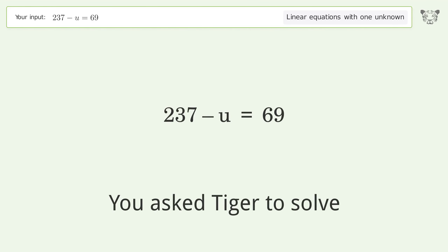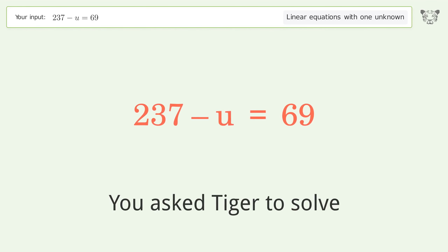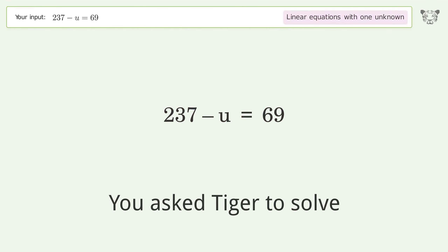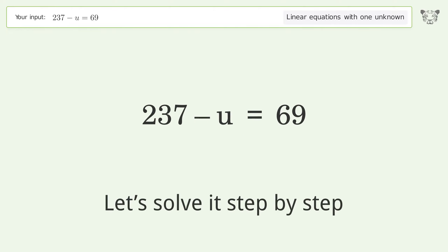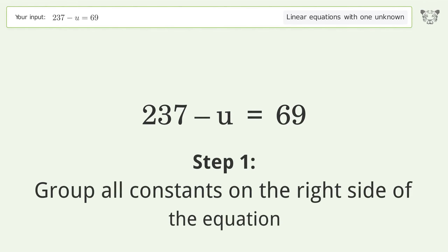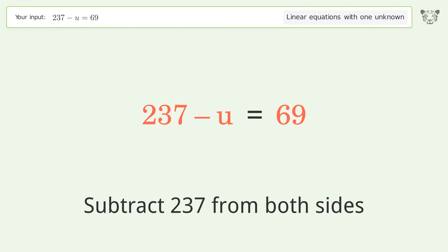You asked Tiger to solve this — it deals with linear equations with one unknown. The final result is u equals 168. Let's solve it step by step. Group all constants on the right side of the equation: subtract 237 from both sides.